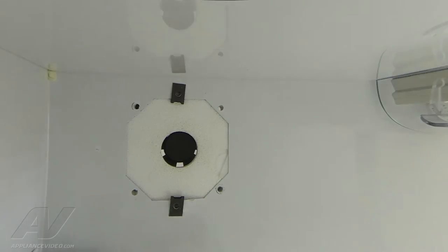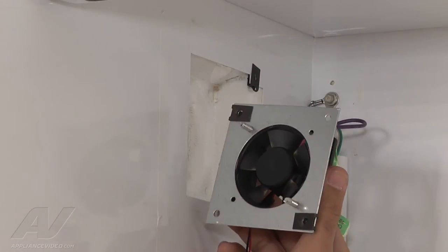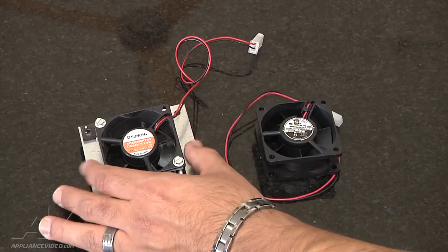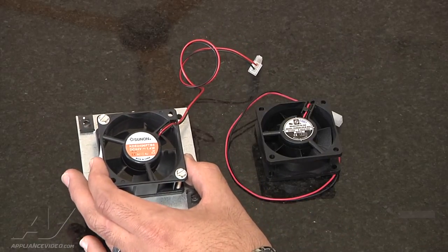Once the screws have been removed, come back to the fresh food section and pull the fan bracket out. To remove the old fan motor from the bracket, remove the two quarter-inch screws.